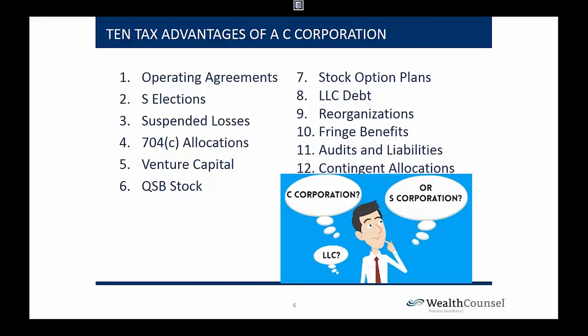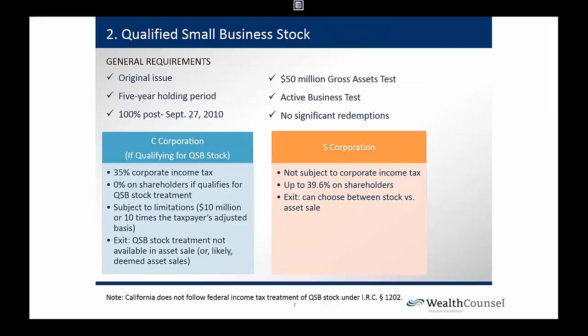What makes this tricky is issue number six: qualified small business stock (QSBS). For federal purposes — not for state purposes, at least in California — an owner of stock in a qualified small business can get a full exemption from tax on gain up to ten million dollars or ten times basis, provided they've invested in a qualified small business, held original issue stock, and held it for five years after September 27, 2010. A qualified small business means 50 million dollars in gross assets or less, meets an active business test, is not a personal services organization, and has no significant redemptions. If those conditions are met, the investor can roll over the gain or exempt it from tax entirely.